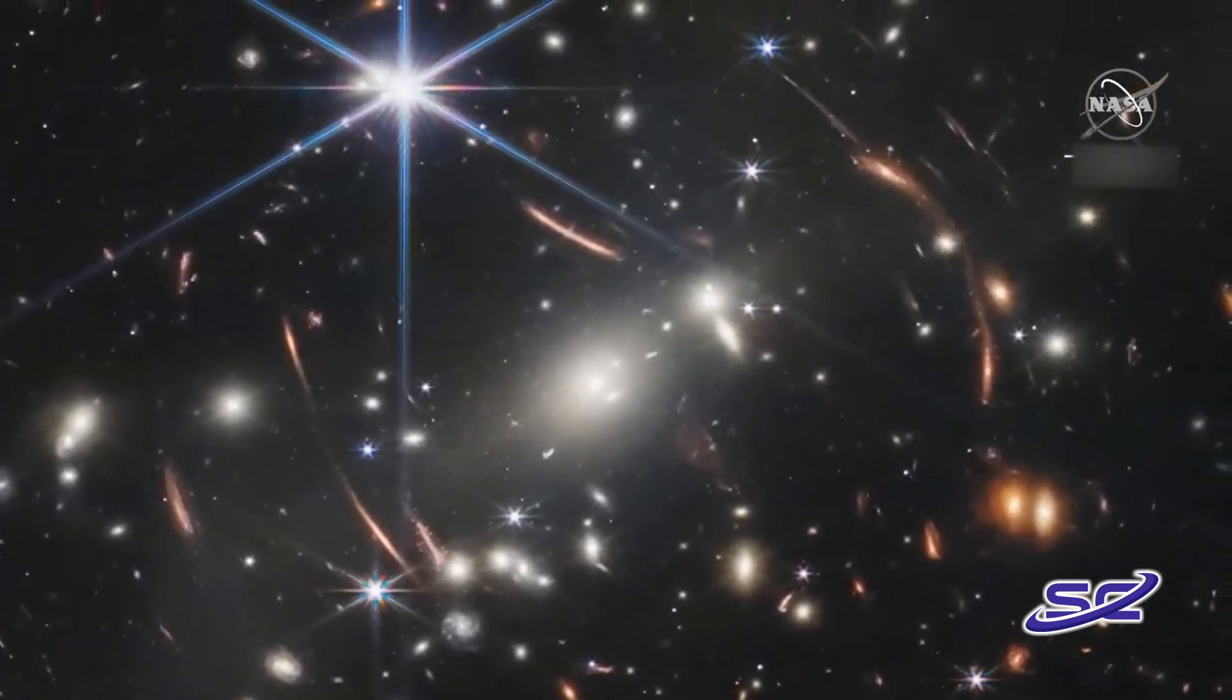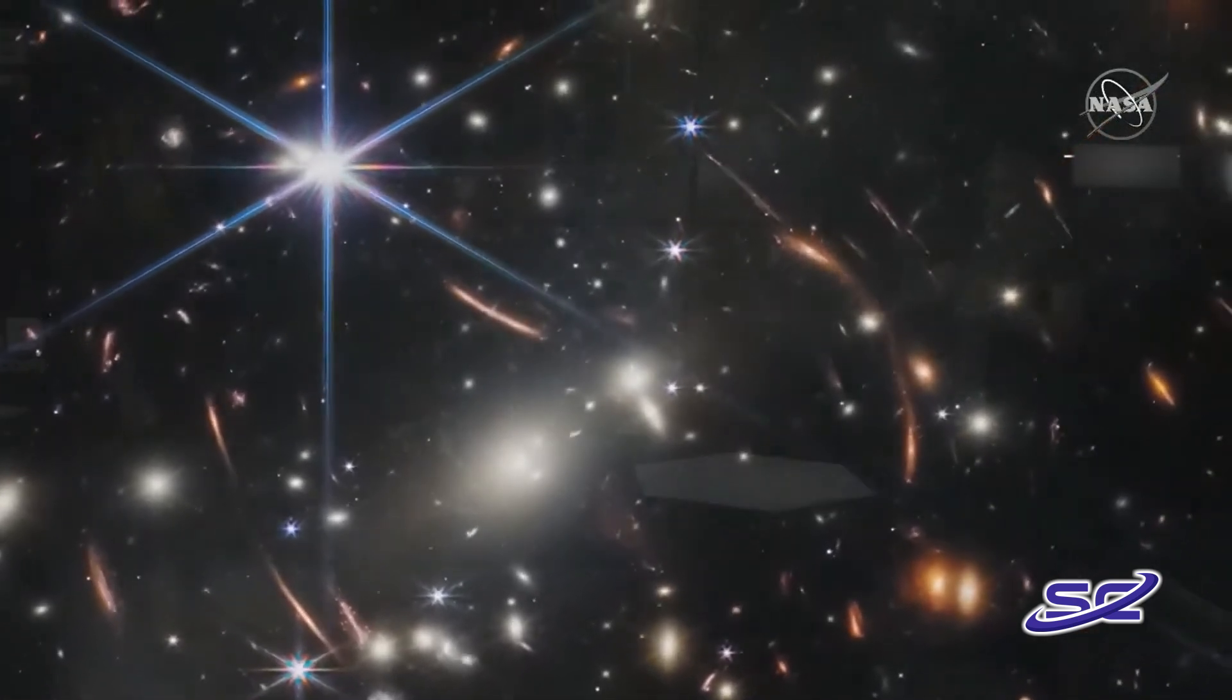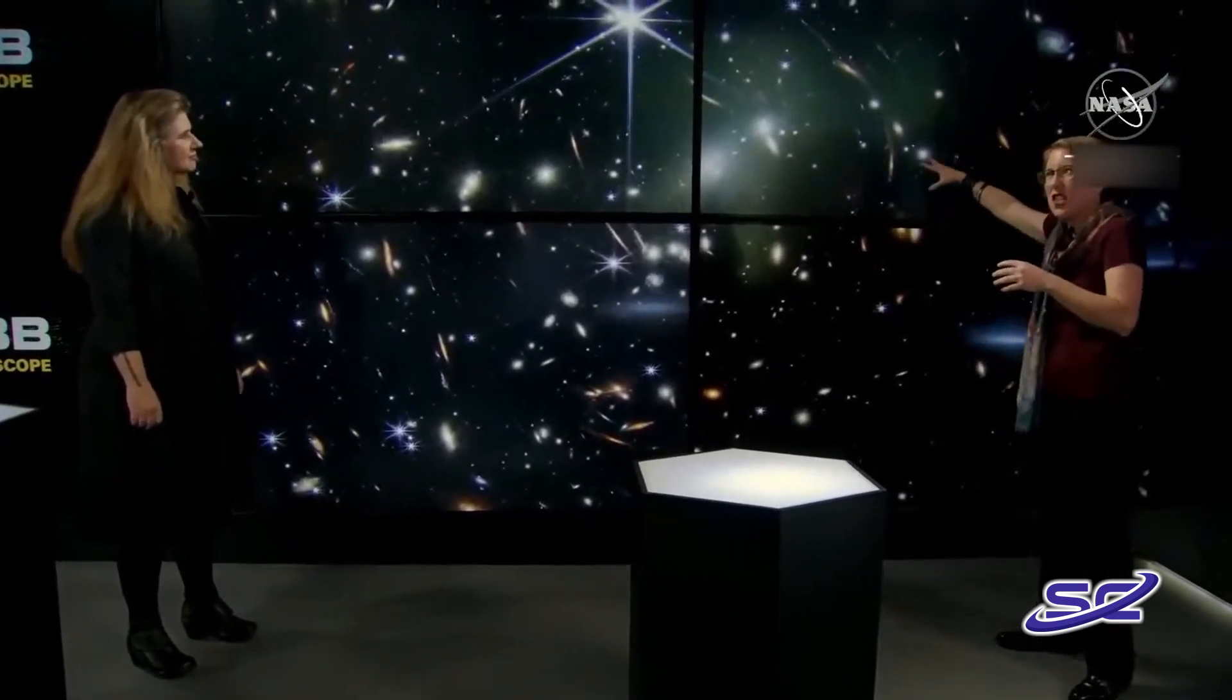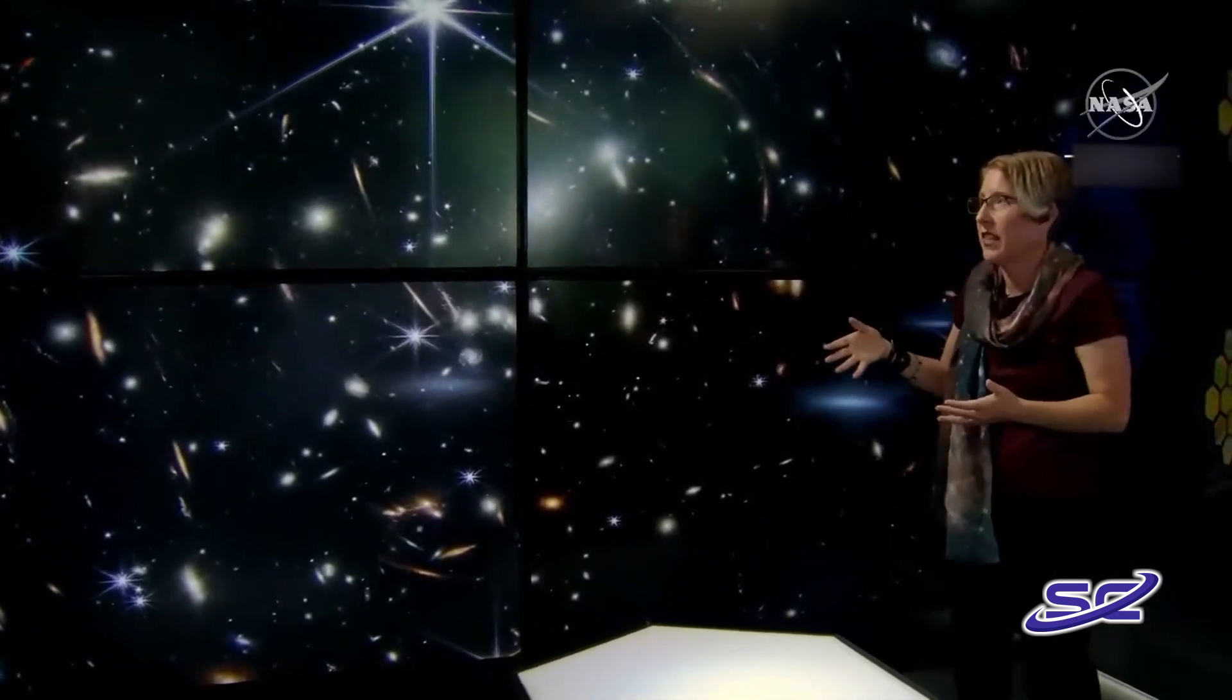And then behind the cluster, the gravity of the cluster is distorting and warping our view of what's behind. And so there are these galaxies that look stretched and pulled, magnified by the gravity of the cluster, just like Einstein said they would.